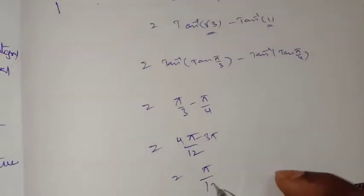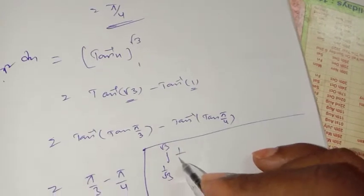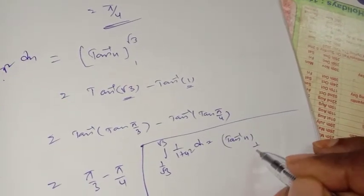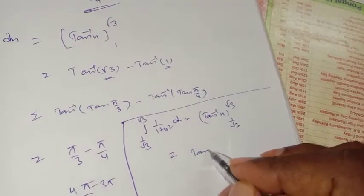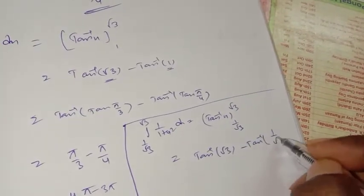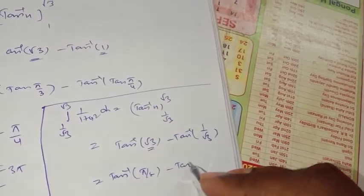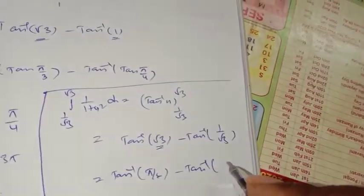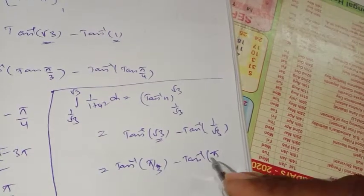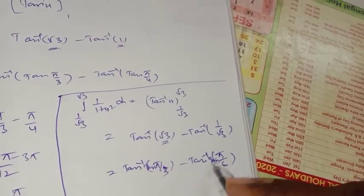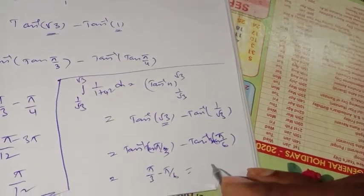Next problem: same integral with limits 1/√3 to √3. We get tan inverse x from 1/√3 to √3. Substituting: tan inverse of √3 minus tan inverse of 1/√3. tan inverse of √3 is π/3, and tan inverse of 1/√3 is π/6. So the answer is π/3 minus π/6 equal to π/6.